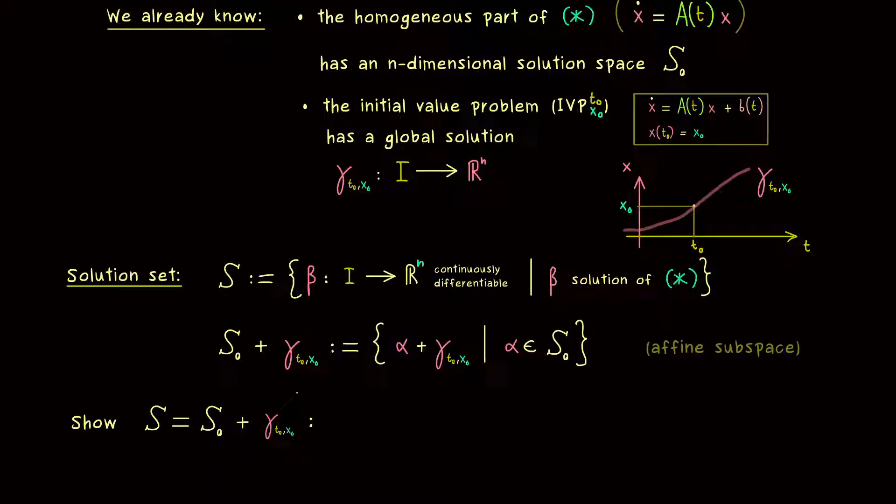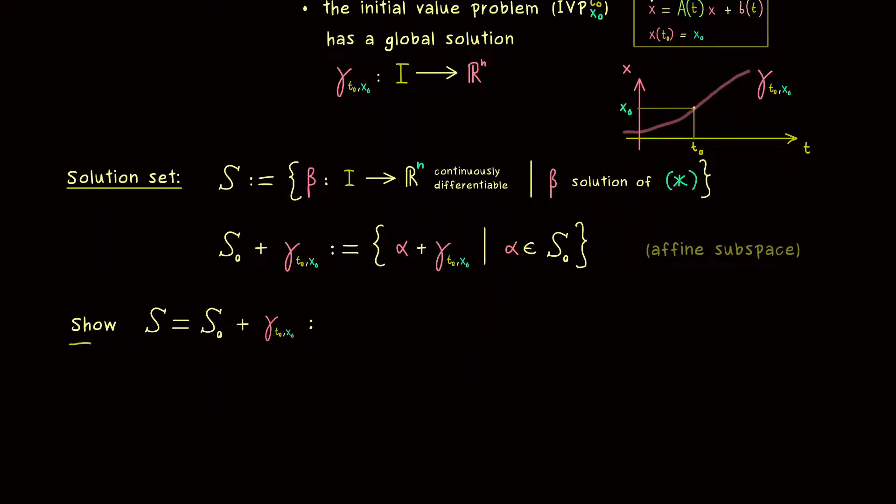So let's use the next minutes to show this nice claim here. And you might already know in order to show an equality for sets we have to show two inclusions. So let's start with this subset relation. So we take an element from the right hand side and show that it also lies in the left hand side.